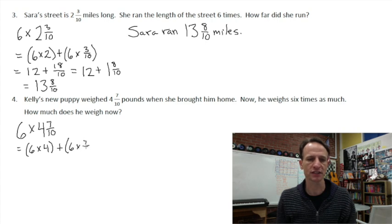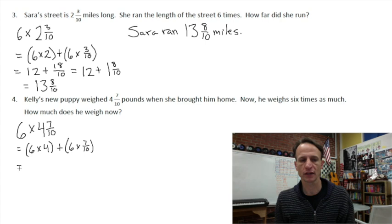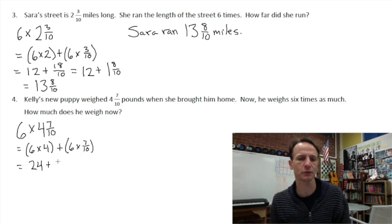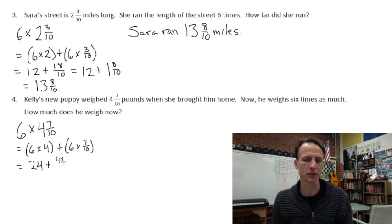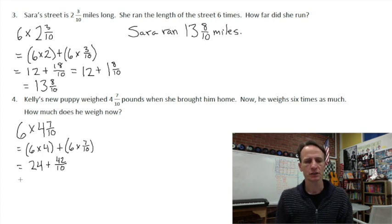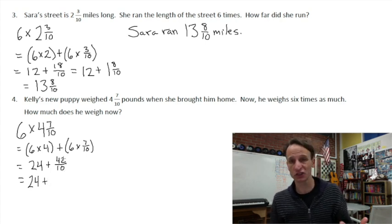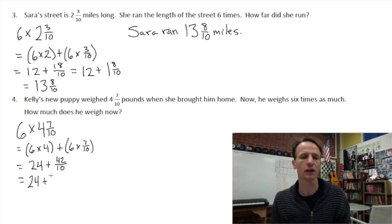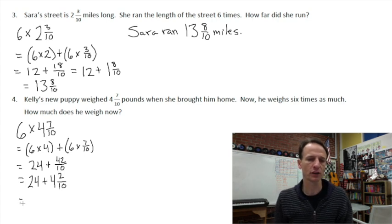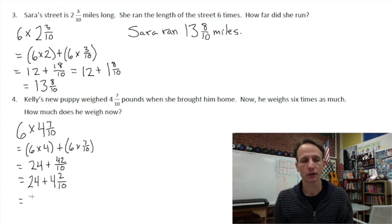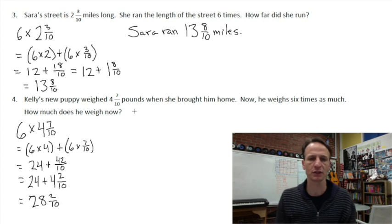So again, we know what to do. We distribute out, multiply the six times the four, and then the six times the fraction of seven-tenths. All right, so six times four is 24, and six times seven-tenths, well six times seven is, that's right, 42, and we're talking about tenths. So now let's work with this improper fraction. So we have 24, right? How many tens in 42? Well that's easy to do, right? Yeah, there are four. And what does that leave? Two-tenths.